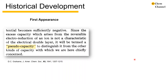The first appearance of a term related to pseudocapacitance is pseudocapacity, used by David Graham to describe current contributions not associated with the formation of the electrical double layer. In this case, the current came from ion adsorption on a mercury surface.